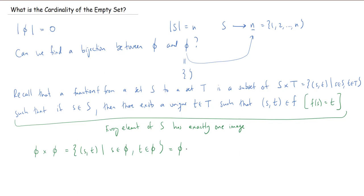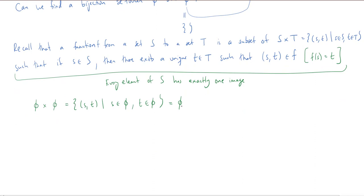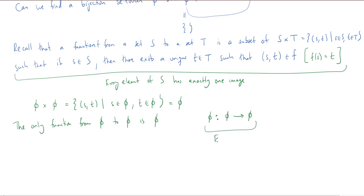Now to get a function from the empty set to the empty set, we need a subset of the Cartesian product, which means we need a subset of the empty set. It doesn't have any subsets, does it? Well, it does — it has one. The empty set is a subset of itself; every set is a subset of itself. So the only function from the empty set to the empty set is the empty set itself. You might call it the empty function.